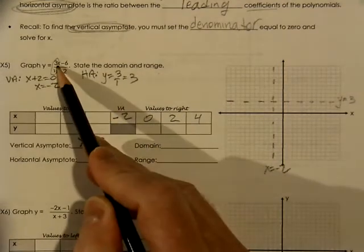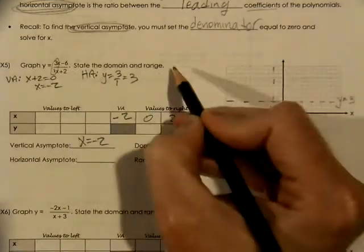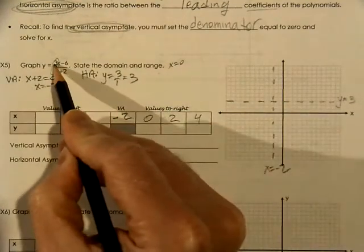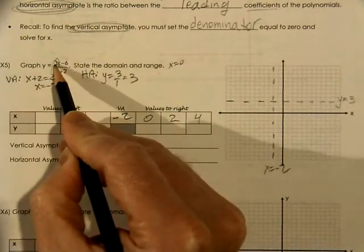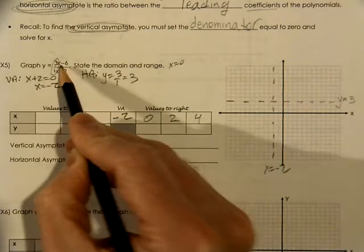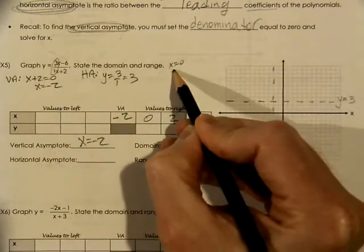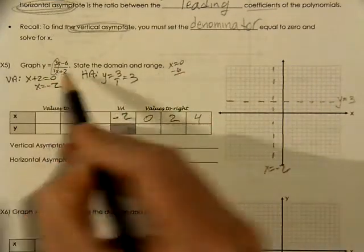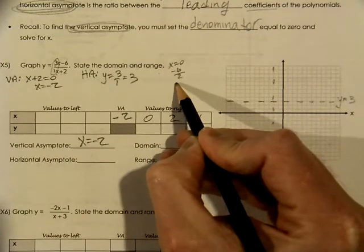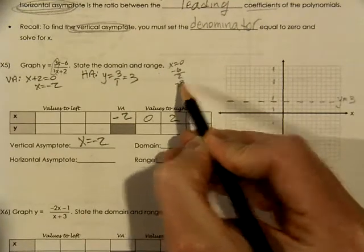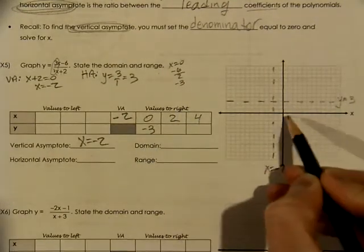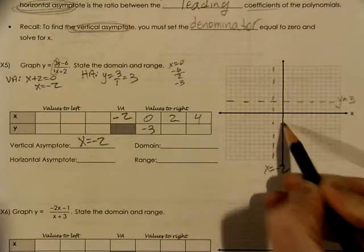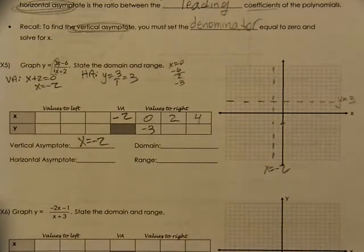When we plug in x equals zero, we get three times zero, which is zero, so you are left with negative six in the numerator. Zero plus two is two in the denominator. So that gives us negative three. When x is zero, we are at negative three.